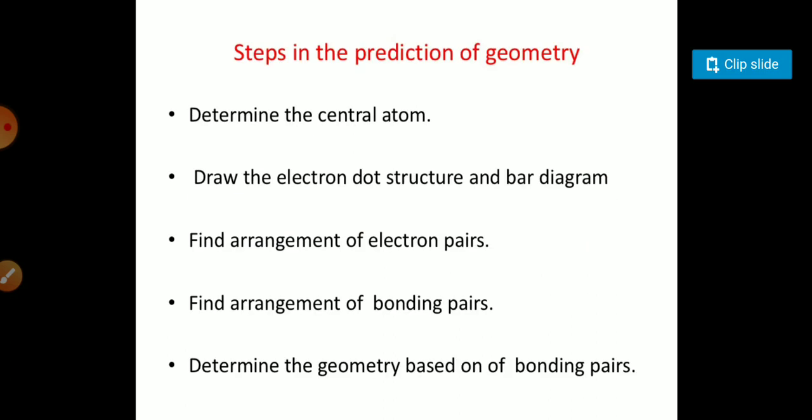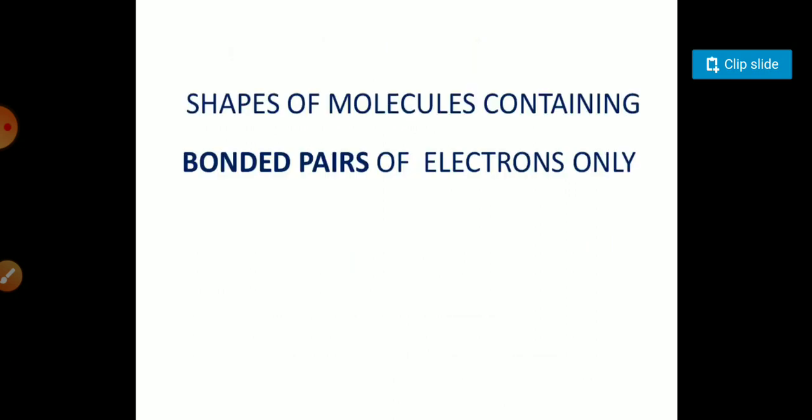How VSEPR theory plays an important role to identify the geometry: it can be used to draw the electron dot structure or a bar diagram, to find the arrangement of the electron pairs, to find the arrangement of the bonding pairs, and to determine the geometry based on the bonding pairs.